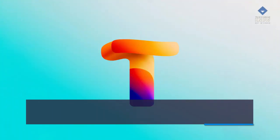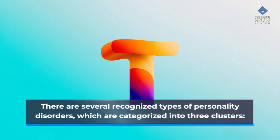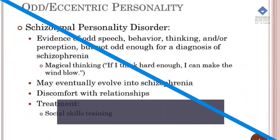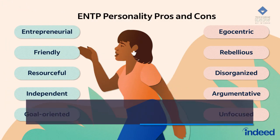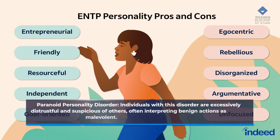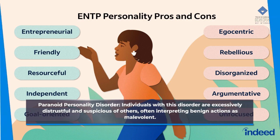There are several recognized types of personality disorders, which are categorized into three clusters. Cluster A: odd, eccentric behavior. Paranoid personality disorder — individuals with this disorder are excessively distrustful and suspicious of others, often interpreting benign actions as malevolent.